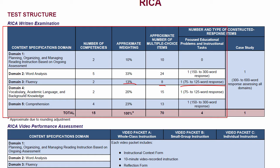Domain four, vocabulary, academic language, and word knowledge, makes up 20% of the test — 15 multiple choice questions, but the essay is only 75 to 125 words. Comprehension comes in second to word analysis at 23% of the test, with 13 multiple choice questions, but look at the essay word counts: 150 to 300 words and 150 to 300 words. The case study is 300 to 600 words and is going to contribute quite a bit toward your score, so nailing the case study is really important.